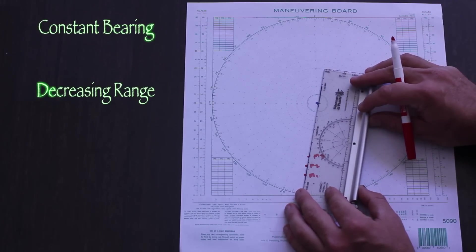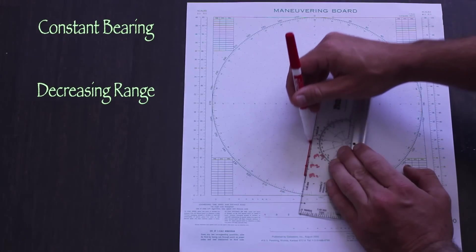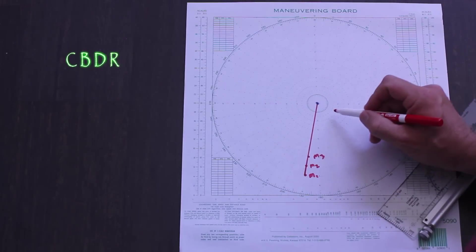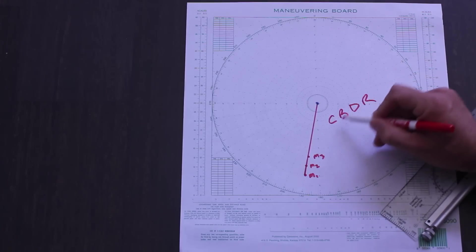This is a case of constant bearing and decreasing range. If neither ship alters its vector, the two ships will collide. CBDR indicates risk of collision, so this is definitely something you want to watch out for.